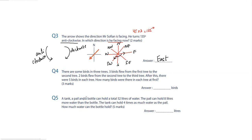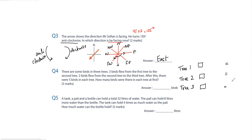Question four: there are some birds in three trees. Three birds flew from the first tree to the second tree, and two birds flew from the second tree to the third tree. After this, there are five birds in each tree. How many birds were there at first? Let's call them Tree 1, Tree 2, and Tree 3, with unknown starting numbers.